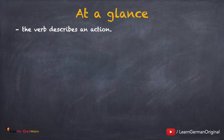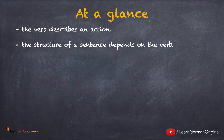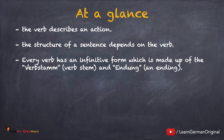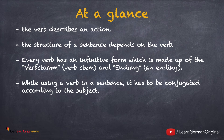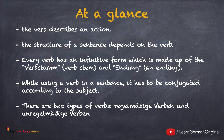Now let's summarize what we have learned in this lesson. A verb describes an action and the structure of a sentence depends on the verb. Every verb has an infinitive form made up of the verb stem and an ending. When using a verb in a sentence it must be conjugated according to the subject. There are two types of verbs: regelmäßige Verben and unregelmäßige Verben — regular and irregular. In regular verbs the verb stem remains unchanged, whereas in irregular verbs the verb stem changes. The endings are the same as per the subject.